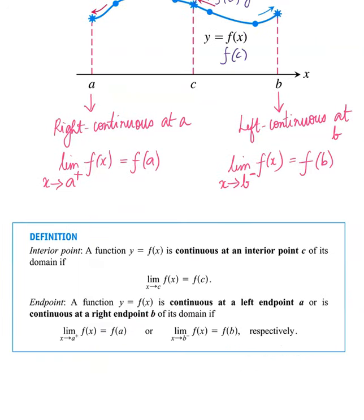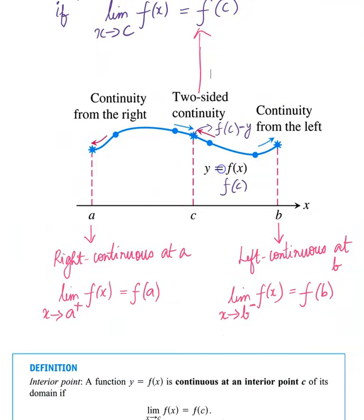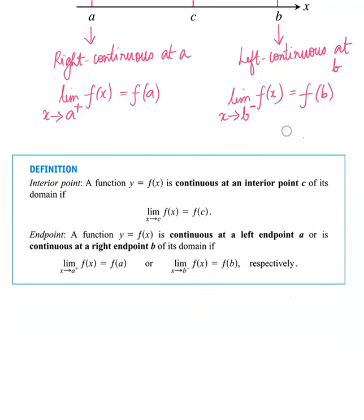Here is the formal definition. Interior point: if a function y = f(x) is continuous at an interior point c of its domain, if the limit of f(x) as x approaches c equals f(c). End point: a function y = f(x) is continuous at a left endpoint A or right endpoint B of its domain if the limit of f(x) as x approaches A⁺ equals f(A), or the limit as x approaches B⁻ equals f(B), respectively.